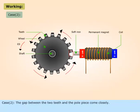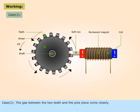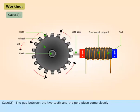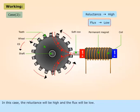Case 2: The gap between the teeth and the pole piece becomes larger. In this case, the reluctance will be high and the flux will be low.